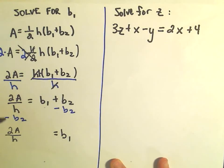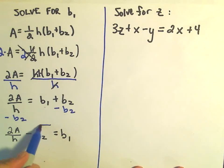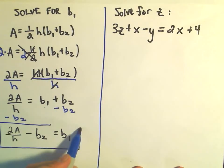But we do have, we could simply rewrite it as 2A over h minus b2. And now we have solved for b1. It's all by itself, so we are finished.